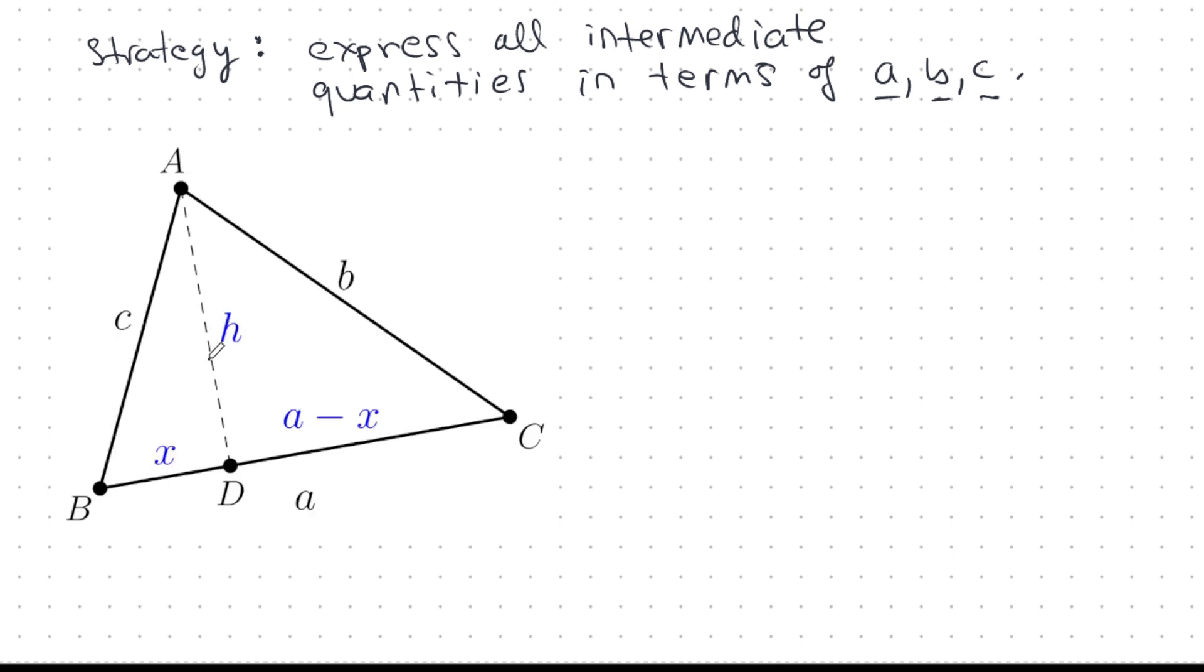So let's start. I will drop here a perpendicular line from A to D. This is a perpendicular line. H is perpendicular. And let's break up side little a from B to C, big B to big C. Let's break that up into X and A minus X. And as I said, let's break up the proof into easy to digest steps.